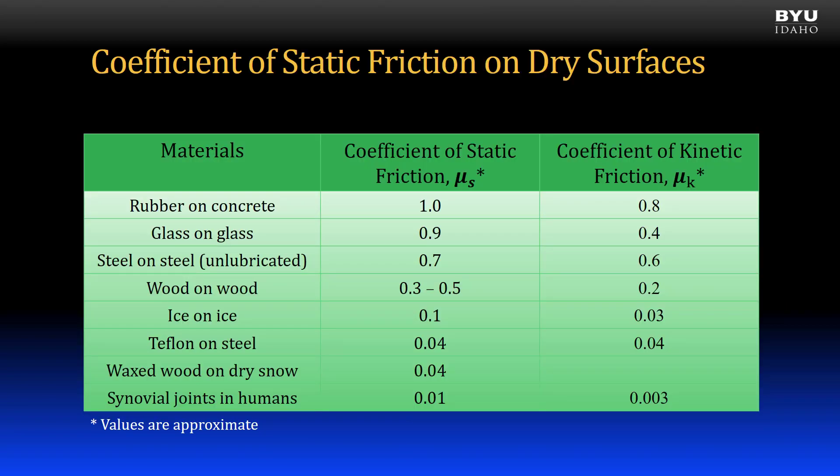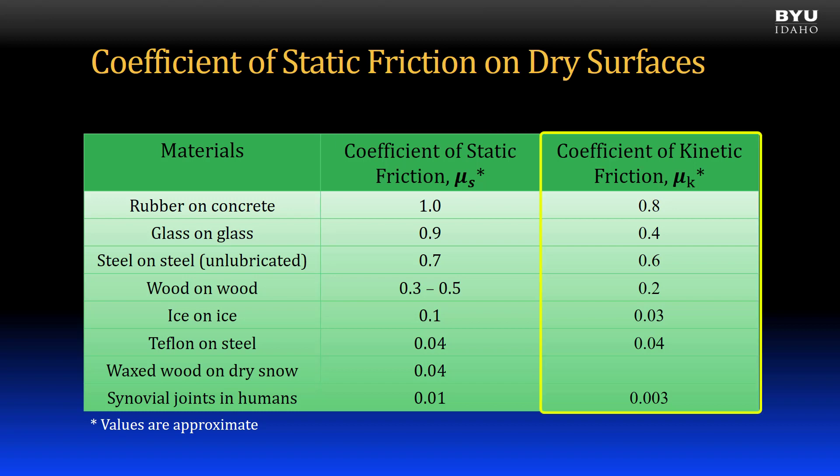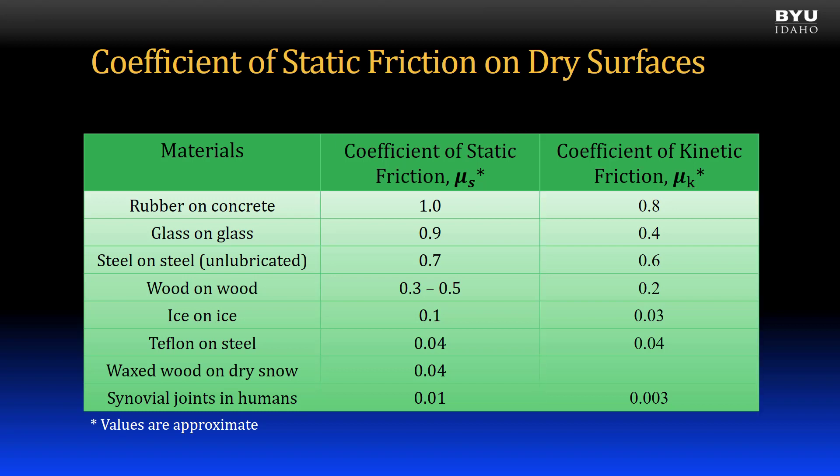The only difference between these two equations is the coefficients of friction. Here's a table with approximate values for the coefficients of static and kinetic friction. Note that the coefficients of friction are unitless numbers. You can see that generally, the coefficient of kinetic friction is less than the corresponding coefficient of static friction — as we saw in the graph of applied force versus friction.